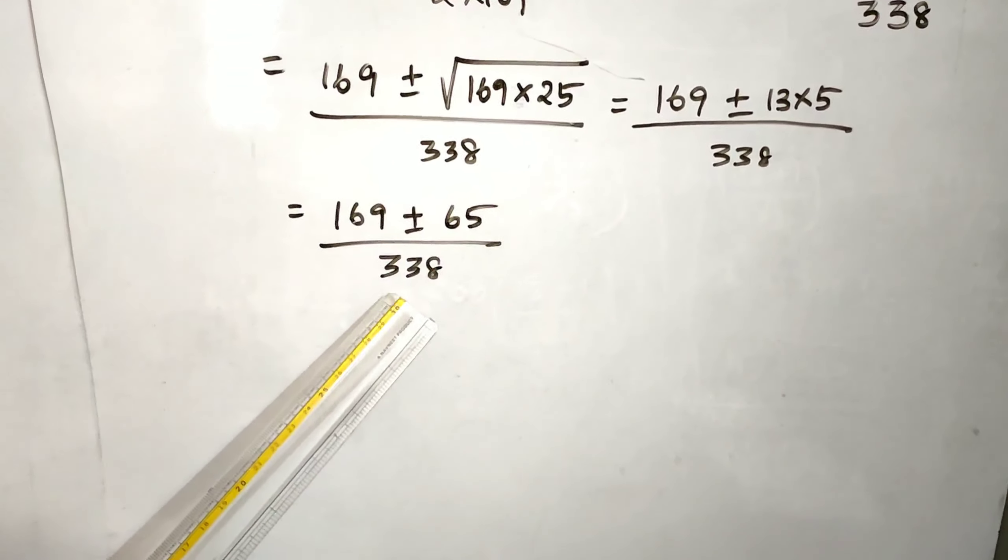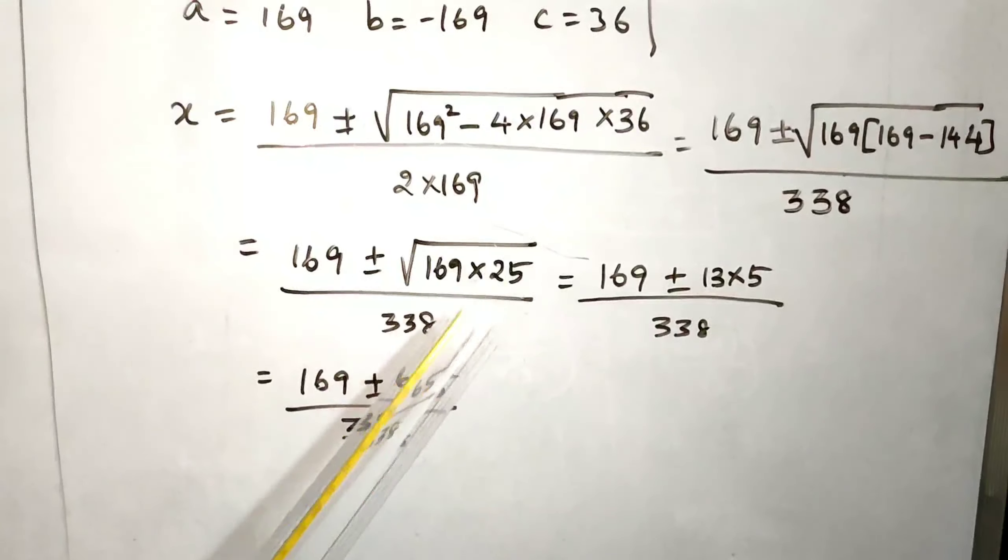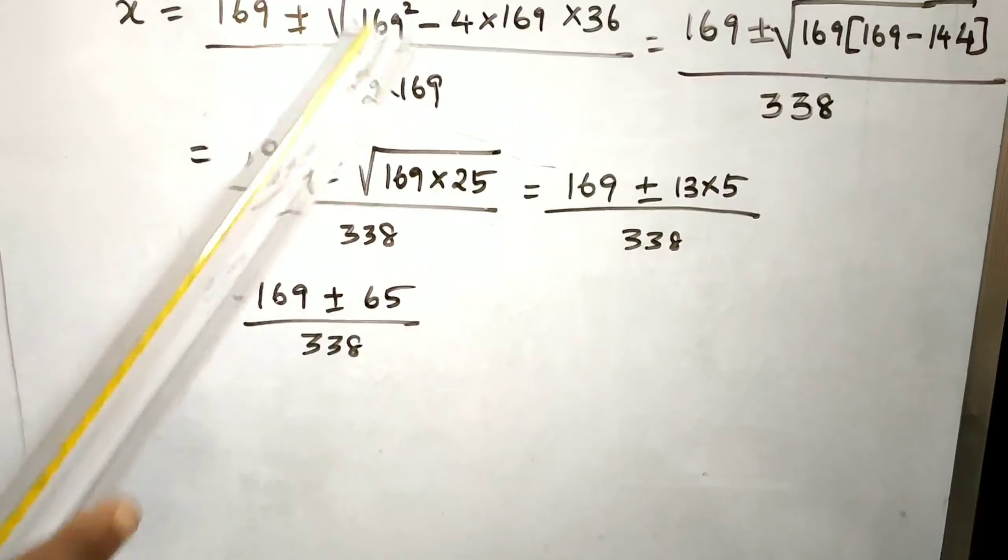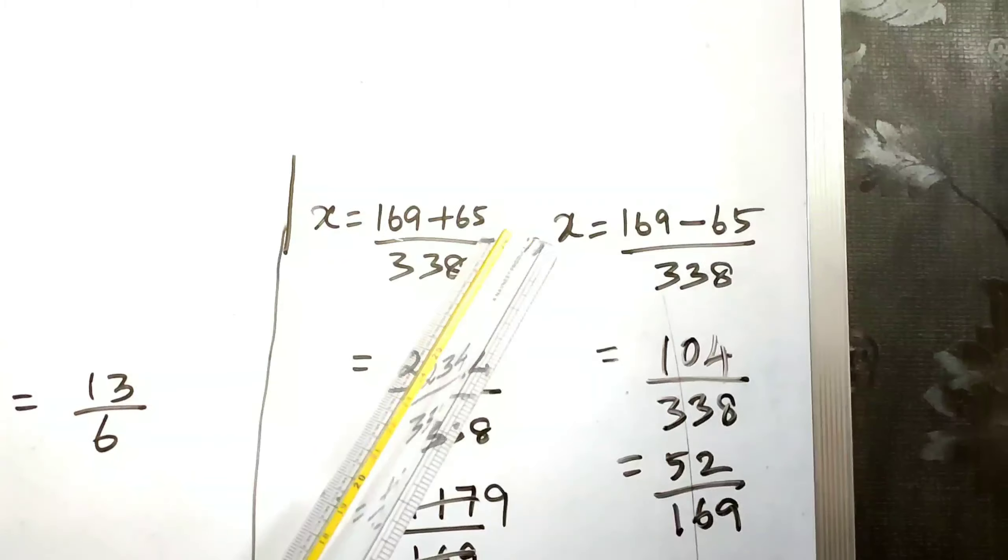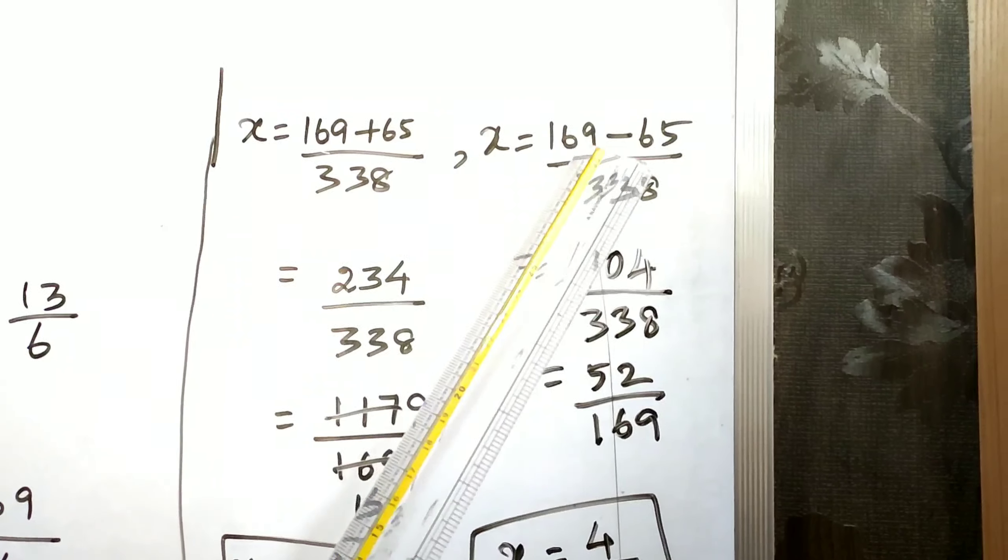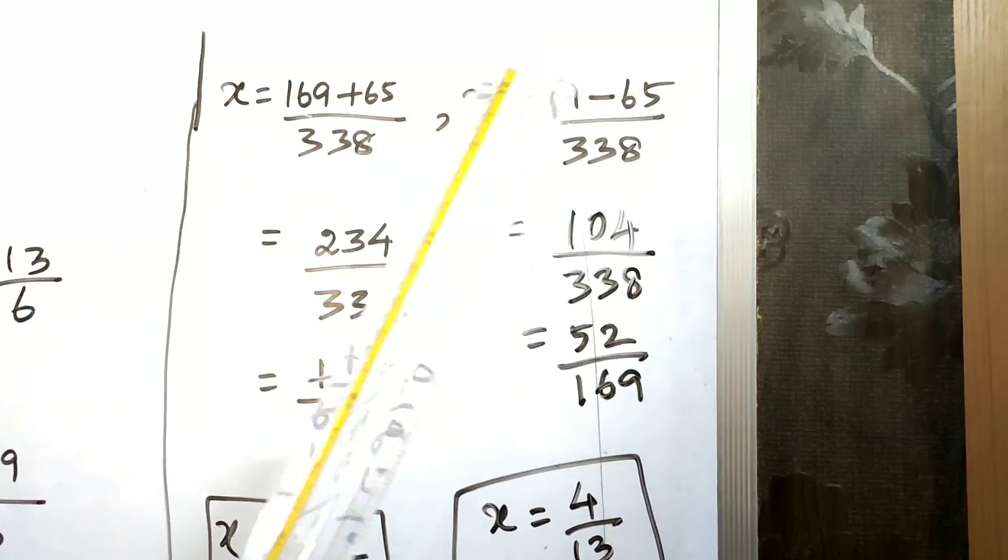169 plus or minus 65 by 2 times 169, which is 338. x equals 169 plus 65 by 338, or x equals 169 minus 65 by 338.